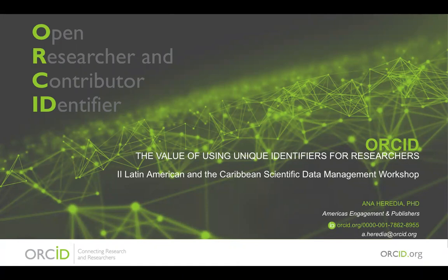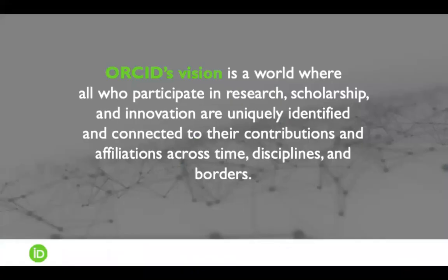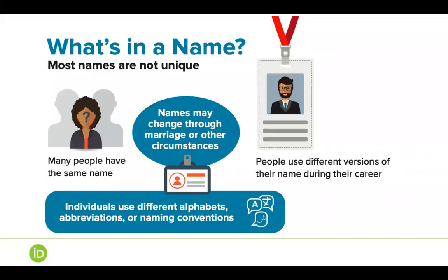ORCID is an acronym for Open Researcher and Contributor Identifier, meaning that not only researchers may benefit from having an ORCID ID, but anyone involved in scholarly activities. Precisely, ORCID's vision is a world where all who participate in research, scholarship and innovation are uniquely identified and connected to their contributions and affiliations across time, disciplines and borders. But how to achieve this identification and trusted connections if the data and metadata are not good or validated?